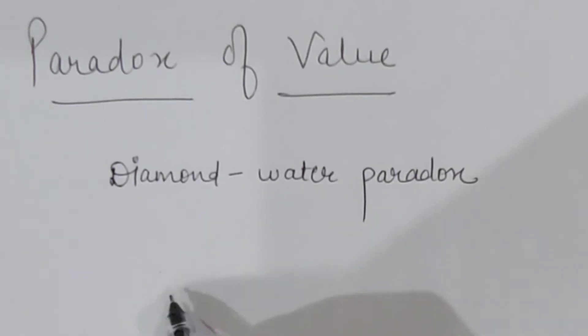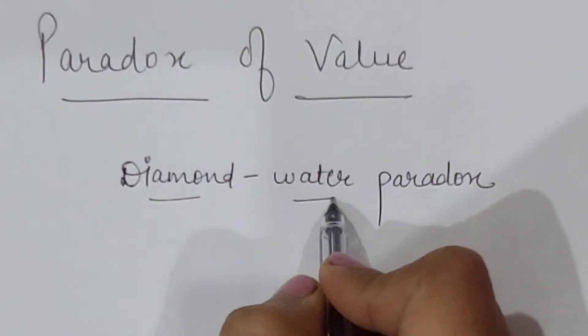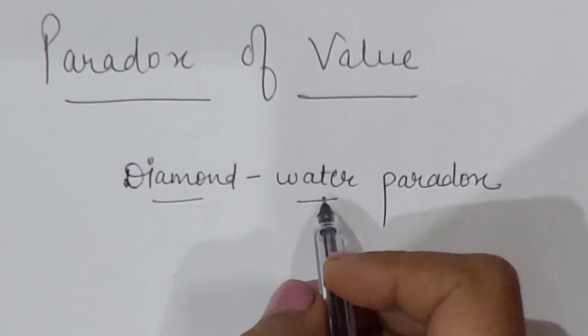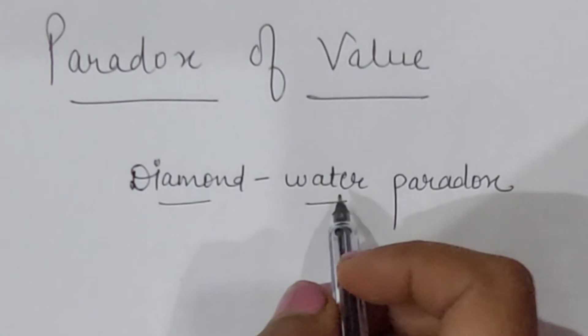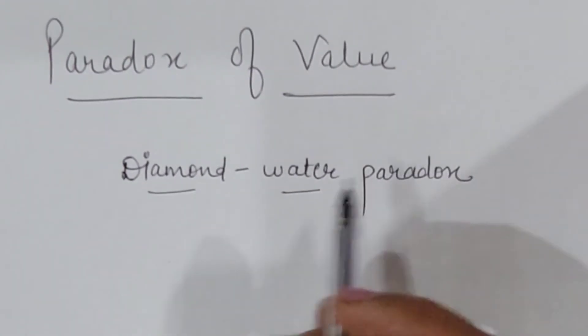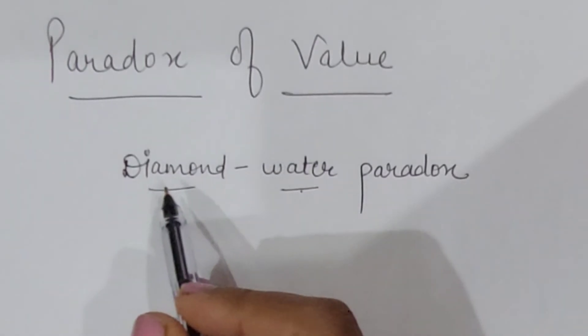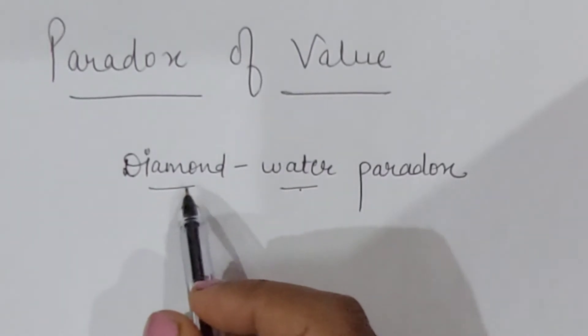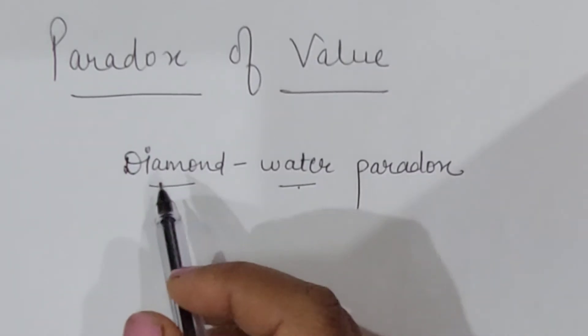Let's take an example of diamond and water. If we talk about water, then water is more important than diamond. One obtains more utility from water than diamonds, but price of water is far less than the price of diamonds.